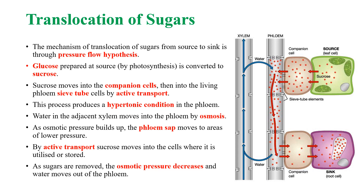Now let us study how sugar is transported from source to sink by the pressure flow hypothesis. Glucose produced at the source is converted to sucrose, and this sucrose moves into the companion cell and then to the sieve tube by active transport. This process produces a hypertonic condition in the phloem. As a result, water from the xylem tissue flows to the phloem tissue by osmosis. As osmotic pressure builds up in the phloem, the phloem sap moves to areas of lower pressure. By active transport, sucrose moves into the cells where it is stored — this is the sink. As sugars are removed, the osmotic pressure decreases, and as a result, water moves out of the phloem to the xylem.